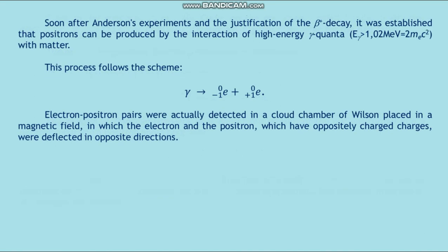Soon after the Joliot-Curie experiments and the establishment of beta-plus decay, it was found that positrons can be produced by the interaction of high-energy gamma quanta (E_γ ≥ 1.02 MeV) with matter, via the pair production process: γ → e⁻ + e⁺. Electron-positron pairs were detected in a Wilson cloud chamber placed in a magnetic field, in which the electron and positron — having opposite charges — were deflected in opposite directions.